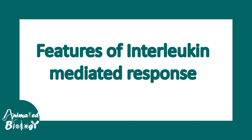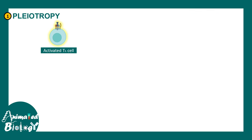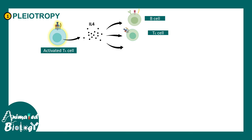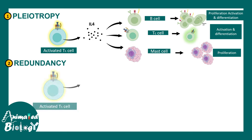Interleukin responses have distinct features. First, pleiotropy — one interleukin can have multiple functions. IL4 is a good example: it acts on B cells causing proliferation and differentiation, on cytotoxic T cells causing activation and differentiation, and on mast cells promoting proliferation. So IL4 has multiple functions depending on context.